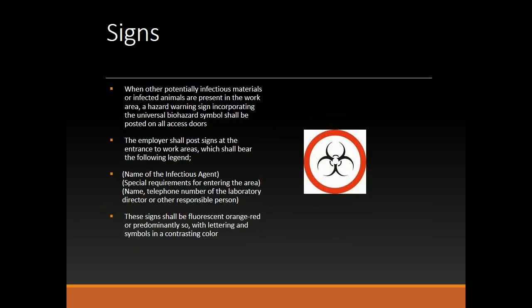Signs. When other potentially infectious materials or infected animals are present in the work area, a hazard warning sign incorporating the universal biohazard symbol shall be posted on all access doors. The employer shall post signs at the entrance to work areas bearing: the name of the infectious agent, special requirements for entering the area, and the name and telephone number of the laboratory director or other responsible person. These signs shall be fluorescent orange-red, with lettering and symbols in a contrasting color.